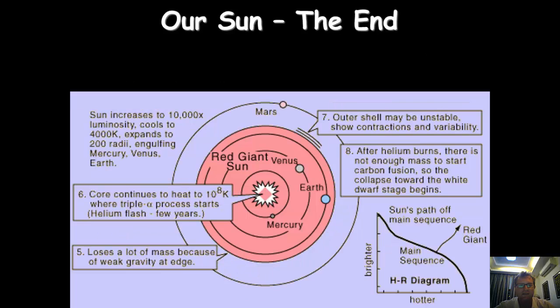What we have with our sun, the core continues to heat to 10 to the eight, where triple alpha process takes place. That's known as a helium flash. It loses a lot of mass because of weak gravity at the edge. The outer shells become often quite unstable due to the contractions and variability. After the helium burns, there's not enough mass to start anything more. So it becomes a red giant and then just slowly contracts and collapses to become a white dwarf. It does have a main sequence path. For the main sequence, it goes up towards being a red giant and then cools back down and drops down to being a white dwarf.